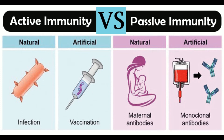Difference 9 — Memory cell formation: Active immunity results in the formation of long-lasting memory cells, whereas in passive immunity, memory immune cells are not formed. Difference 10 — Secondary response: In active immunity, first exposure leads to a primary response, and subsequent exposure to the same pathogen produces a much faster and stronger secondary response. Passive immunity shows an absence of a secondary response.